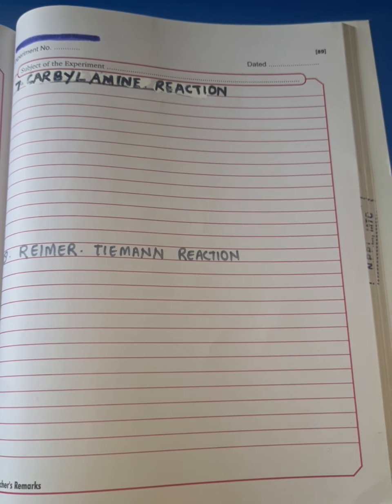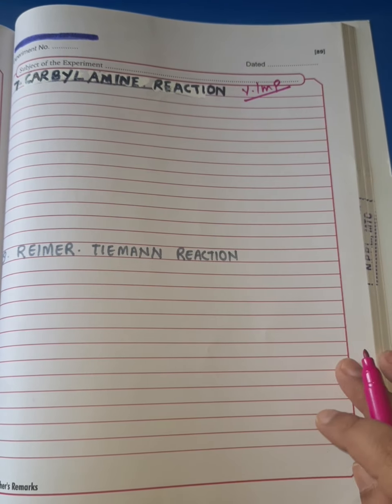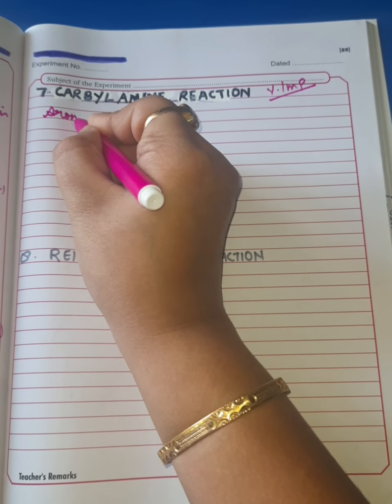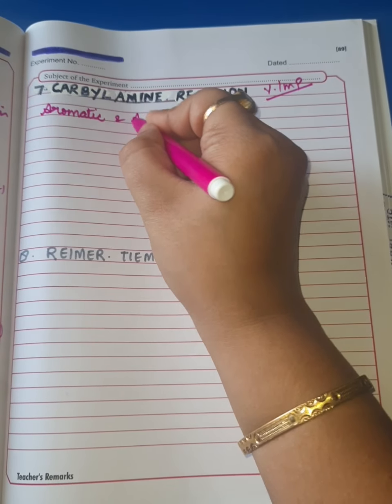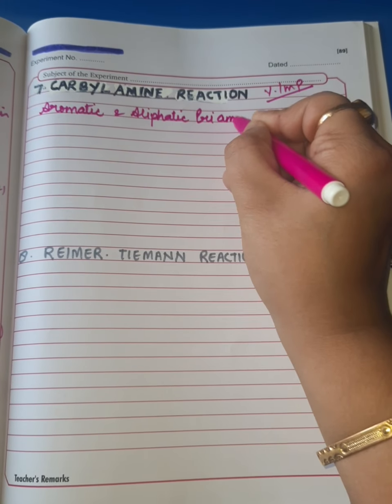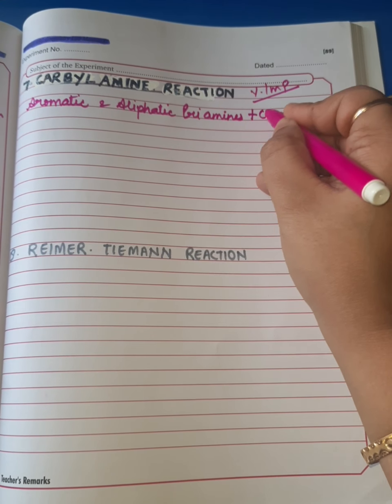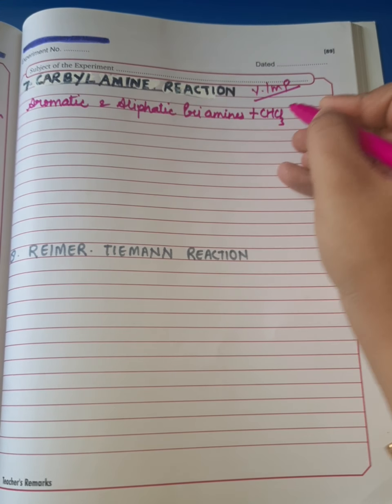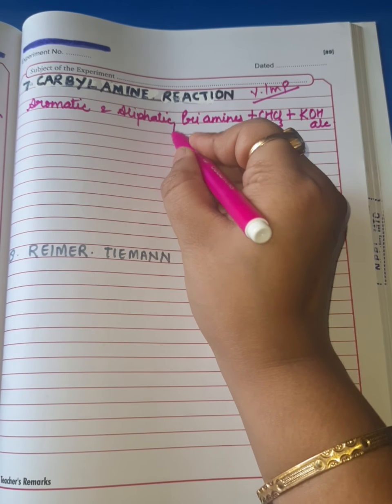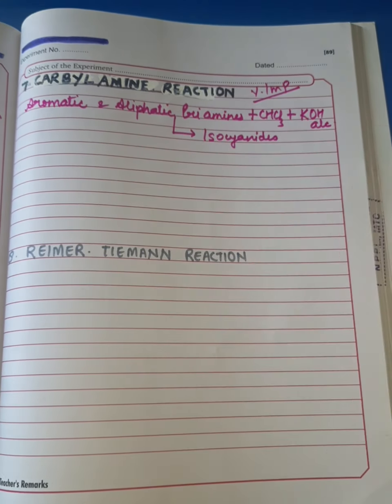First, we'll talk about carbylamine reaction. This is a very important name reaction given by aromatic as well as aliphatic primary amines. Remember, only primary amines, no secondary, no tertiary. When these amines are heated with chloroform along with alcoholic KOH, these aliphatic primary amines convert into their corresponding isocyanides.